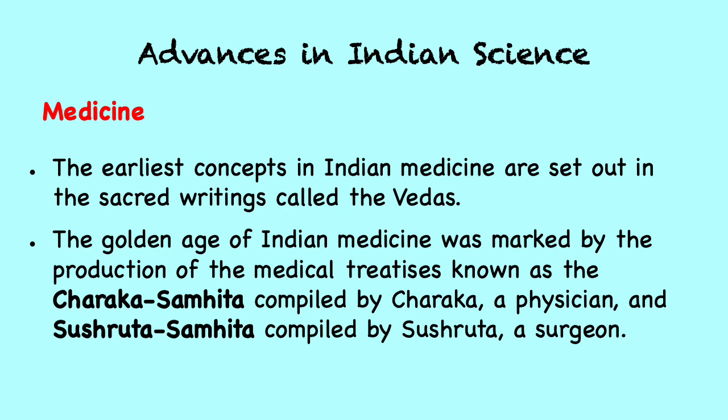Indian medicine also used vegetable drugs from indigenous plants and animal remedies such as the milk of various animals. On the whole, the development of science in medieval India was at a rather slow pace. One possible factor could be the narrow social base of learning — that is, learning was restricted to a small elite group. This was to some extent due to the absence of printing. Printing was introduced in India by the Portuguese. However, the products of their printing press were not aesthetic enough to be appreciated by the Mughal court and nobility, so the possession of books was a privilege of the rich, and thus the spread of knowledge was prevented.